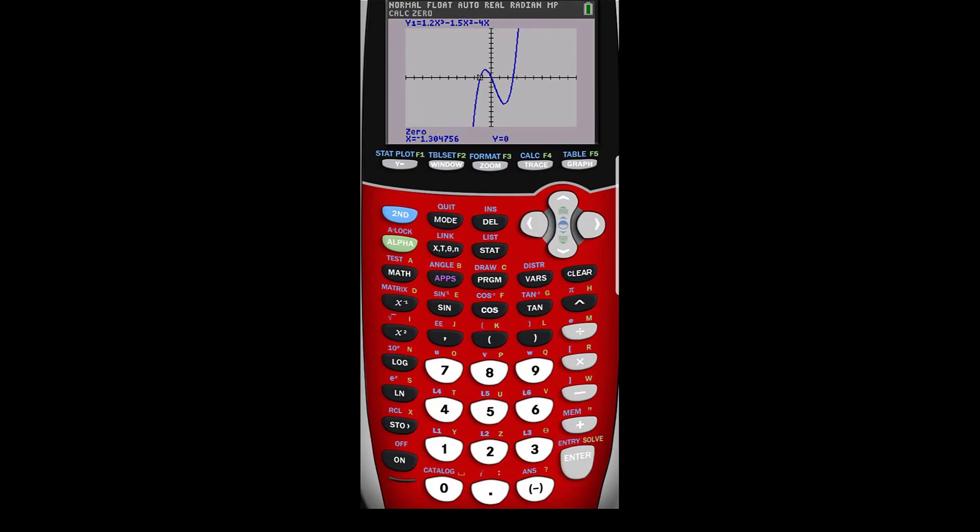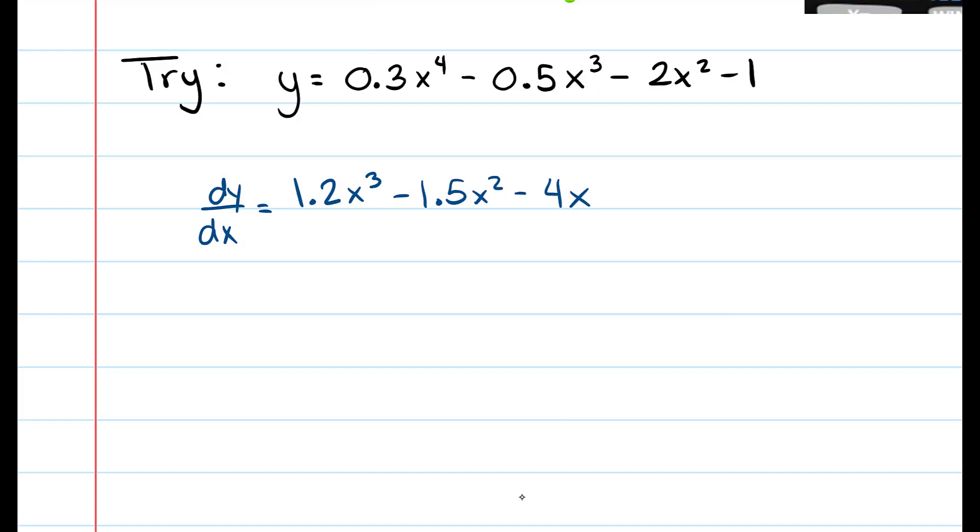And I get negative 1.304, and I'm going to do it again. So I'll pick the left endpoint, pick the right endpoint, and then I'm making a guess. And I get zero, and I'm going to do it one more time. And I get 2.554, so I get x is equal to negative 1.304, zero, and 2.554.